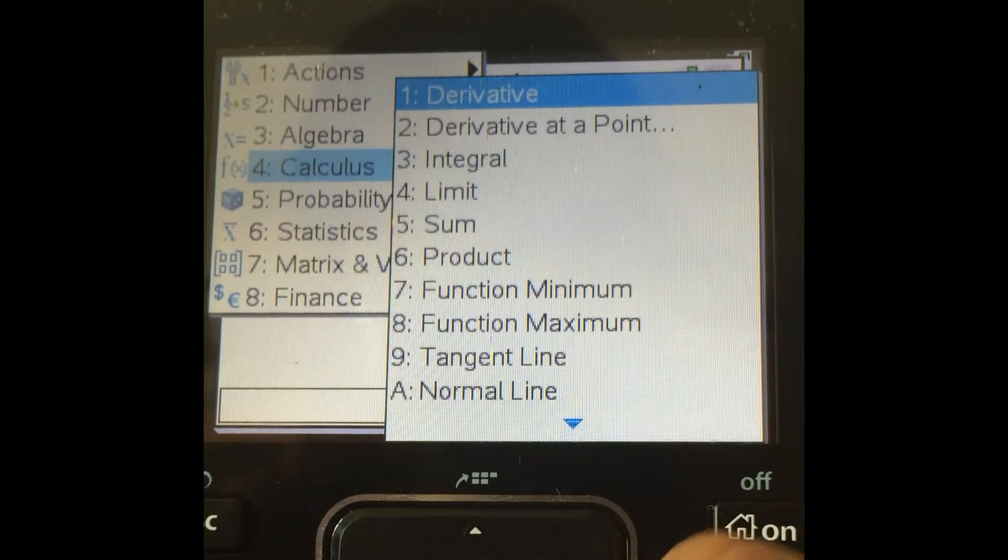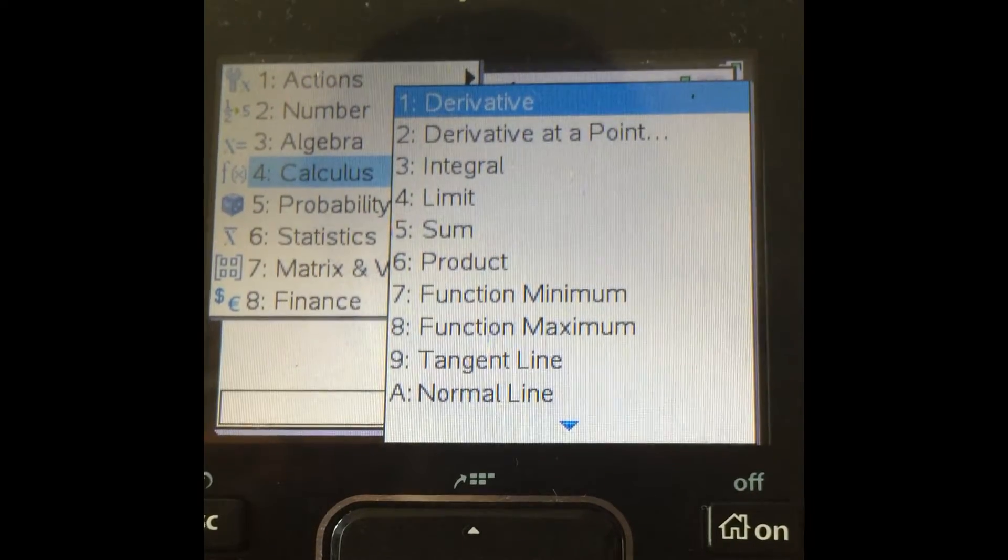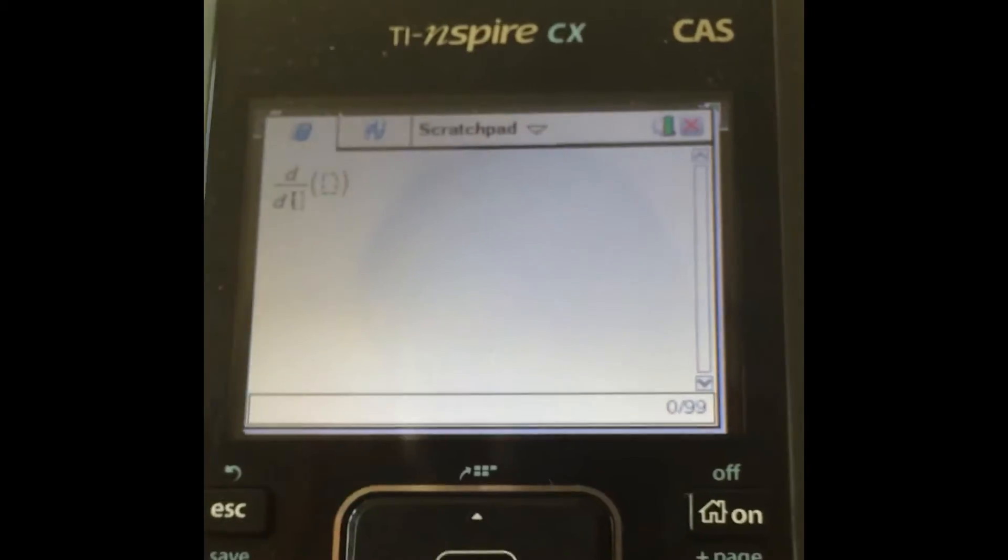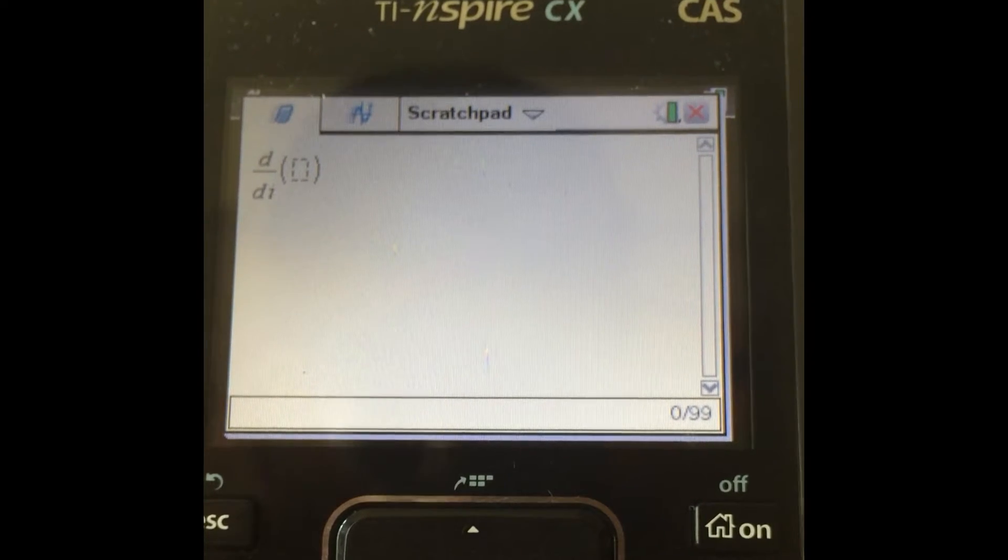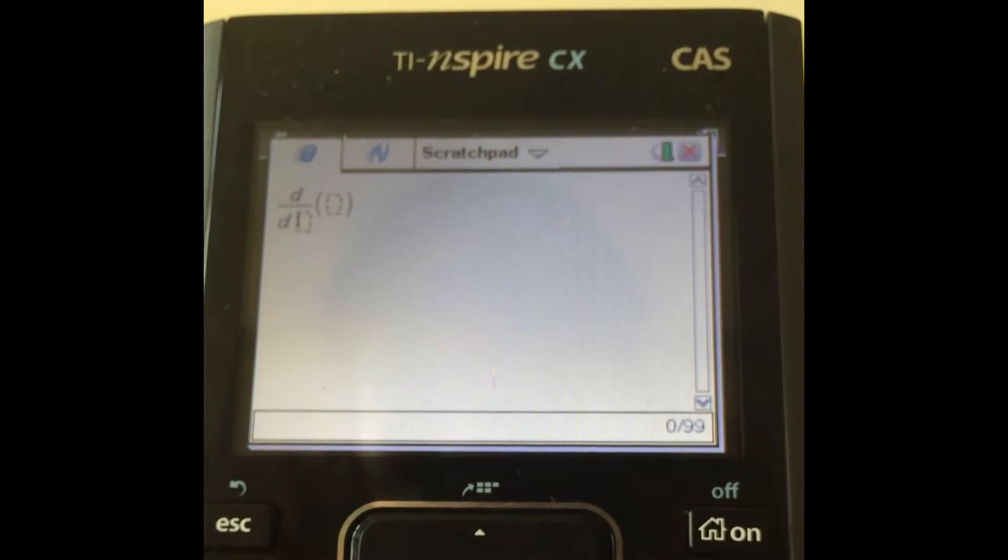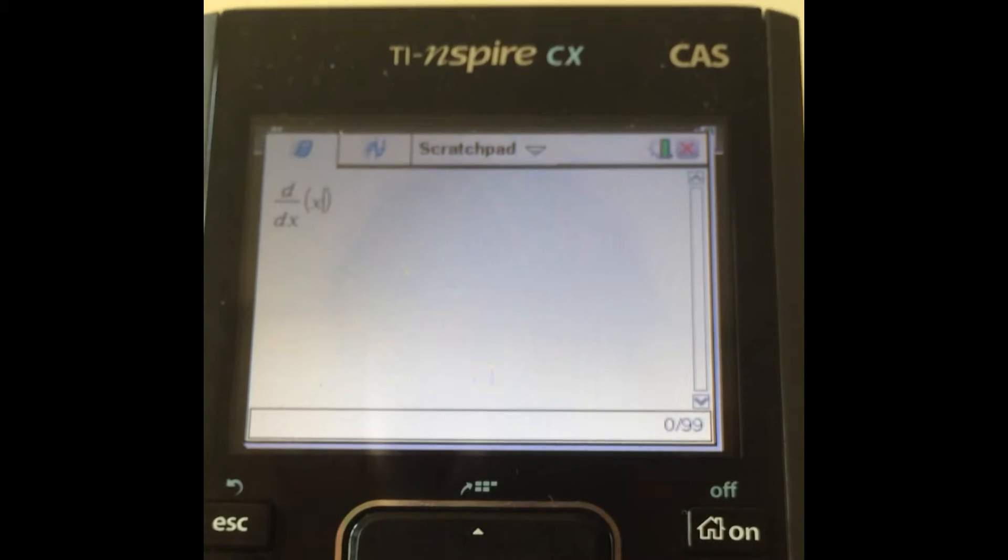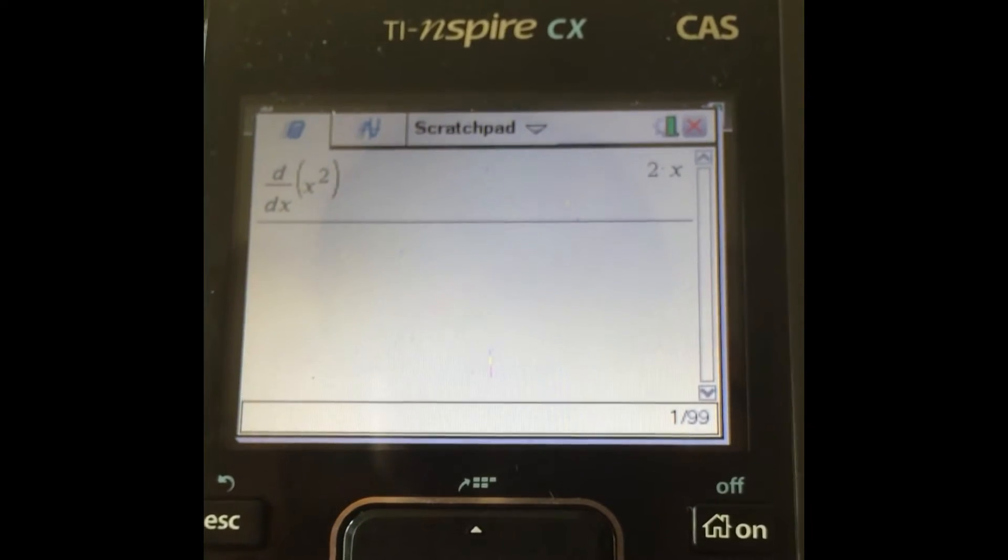Next, under the calculus tab, we have many useful operations. For example, the derivative, so it actually can differentiate something and you can also choose what variable you want to differentiate with respect to. So like d/dx of x squared, and it gives it to you exactly 2x.